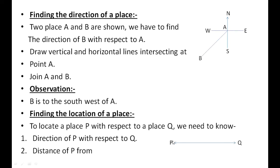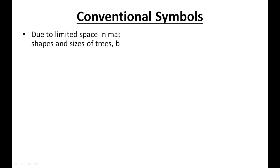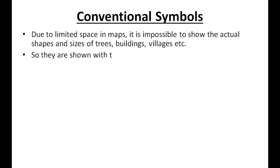Conventional symbols: Due to limited space on maps, it is impossible to show the actual shapes and sizes of trees, buildings, villages, etc. So they are shown with the help of various symbols.